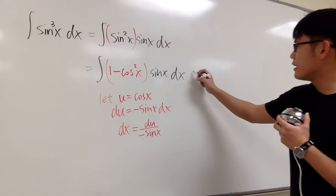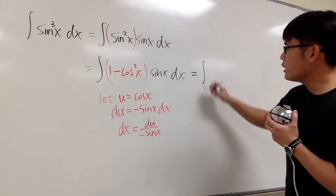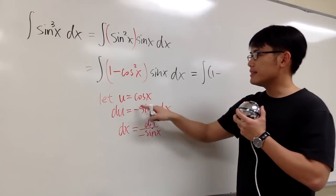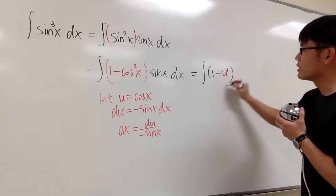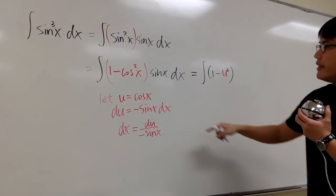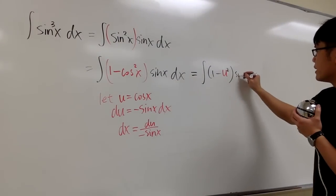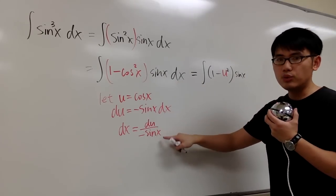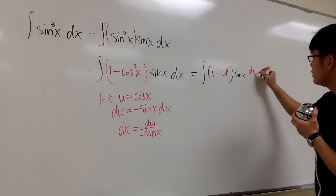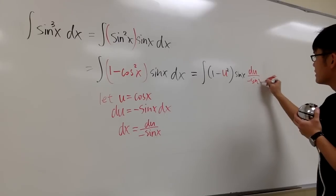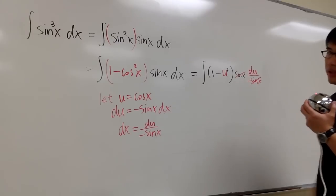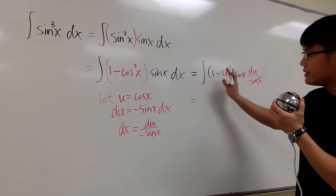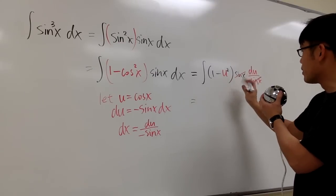And let me show you how we are going to end up. This will be the same as the integral of one minus the cosine, which is the same as u. So we have u squared, because we have cosine squared here. And then, let me just write down sine x right here. I would like to show you guys the cancellations. And the dx is the same as du over negative sine x. And you see, the sine x will cancel each other out.